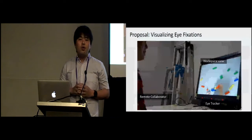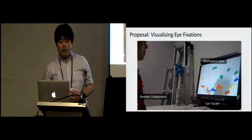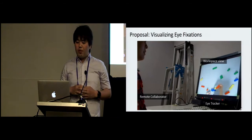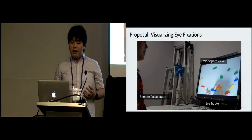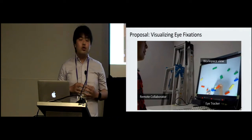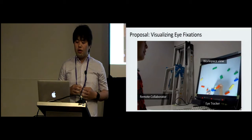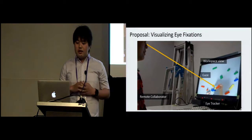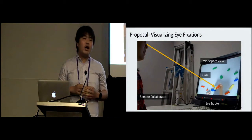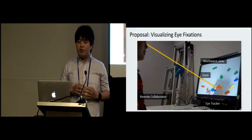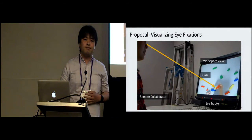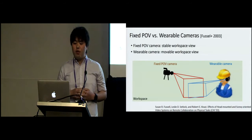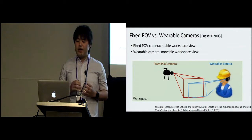In this work, we propose visualizing eye fixations for normal instruction cues on this kind of remote collaboration framework. This image contains a display to show a workspace view to the collaborator. We set an eye tracker under the display. The system tracks collaborator's eye movement and maps gaze position to the workspace. We investigate visualizing eye fixations in two types of settings to generalize its effects.